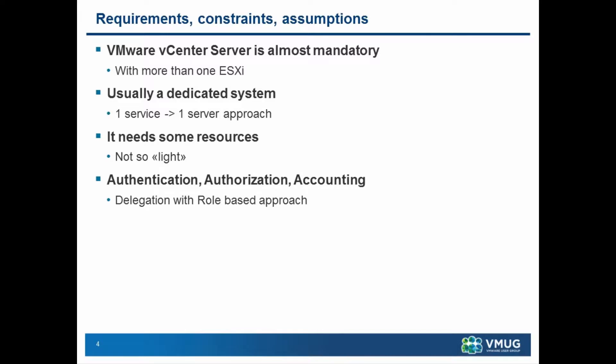You have to start from requirements, constraints, and assumptions — that is really important for each aspect of your deployment before you start. For a vCenter server, you want to use a virtualization approach. One service, one VM for vCenter server is probably the best choice, because if you look at how many ports are opened on a vCenter server, it could be a mess if you have other services on those ports. You can change every port, but then you have to change each connection. So usually it makes sense to have a single system.